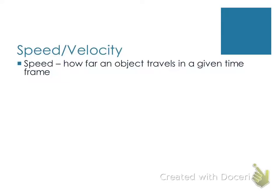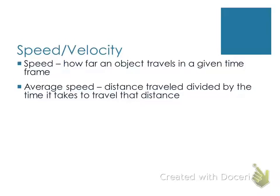Speed and velocity, believe it or not, are two different things. Speed is the amount of distance something travels in a given time frame — distance traveled divided by time. There's instantaneous speed and average speed; we're going to deal with average speed, not tiny derivative time intervals. These two definitions essentially mean the same thing for our purposes.